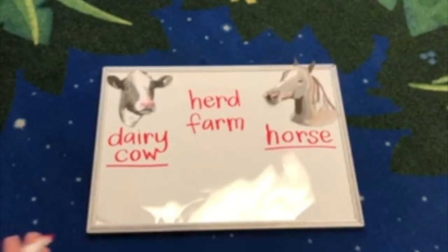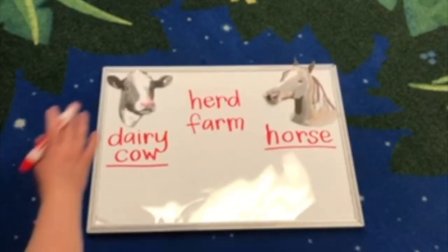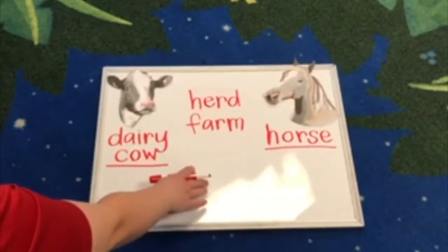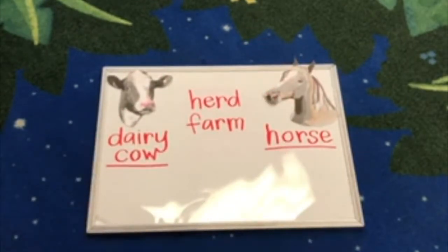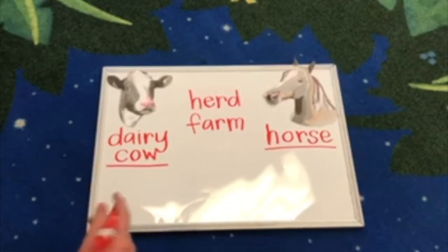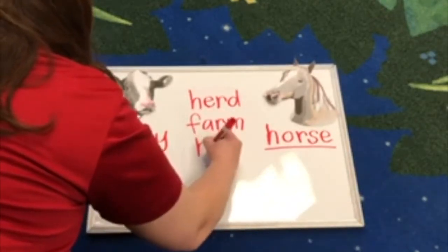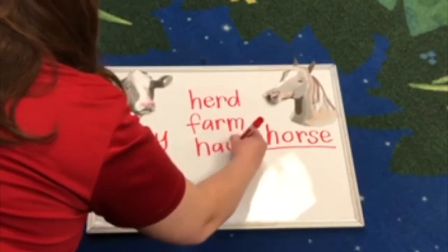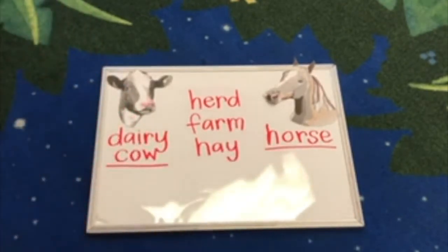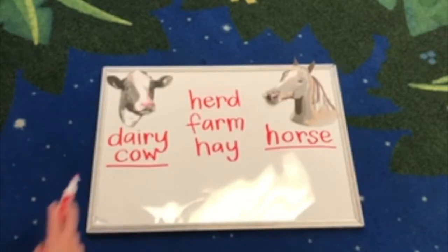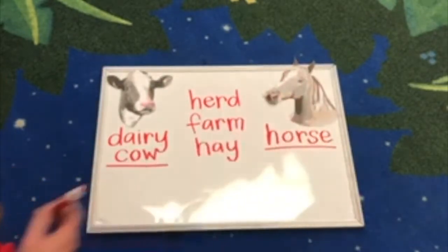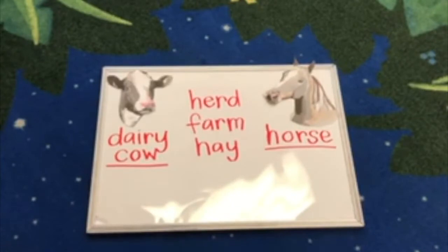Let's think of one more similarity between dairy cows and horses for our whiteboard. What do you see dairy cows and horses mutually eating — what's similar? They love to eat hay, they love to eat grass. These are three big similarities between dairy cows and horses on a farm. Great job!